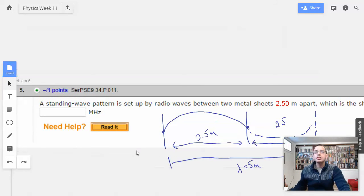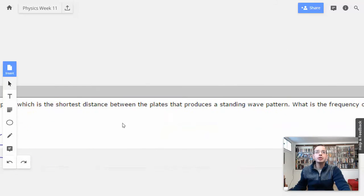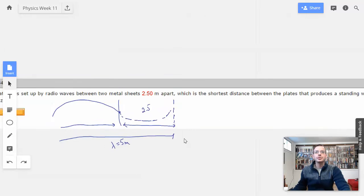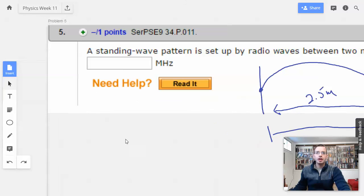All right, so we're looking for the frequency. So radio waves are electromagnetic radiation. So their speed of propagation, their velocity, is c. So v equals d over t, which equals lambda f.